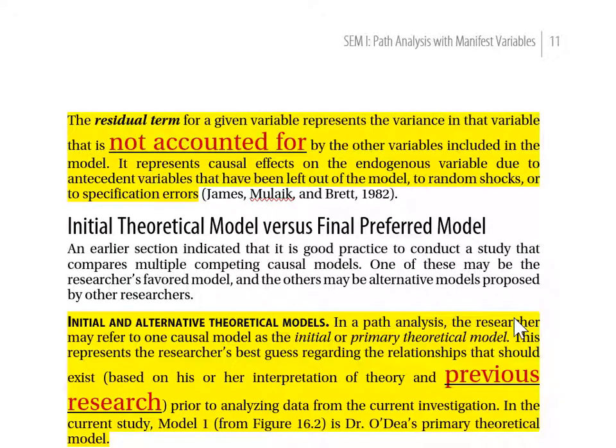In a path analysis, a researcher may refer to one causal model as the initial or primary theoretical model. This represents the researcher's best guess concerning the relationships that should exist, based on their interpretation of theory and previous research, prior to analyzing data from the current investigation.